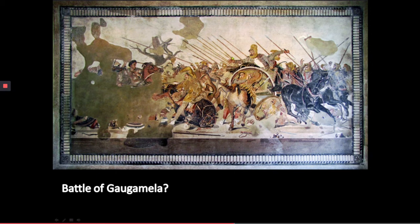Darius looks on in absolute shock and disbelief that this could be happening. We see the shock, the stunned look on his face, the helplessness with which he reaches back toward this dying soldier and makes direct eye contact with Alexander. This is the moment at which he realized they have got to turn around and retreat. So instead of continuing this way, we have over here the chaos as the Persian soldiers have been ordered to retreat — and the charioteer driving Darius's chariot is desperately trying to get his forces turned around.